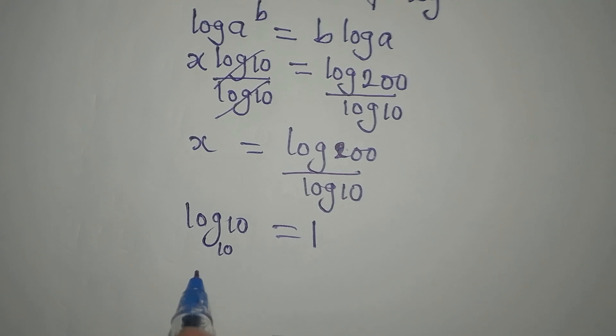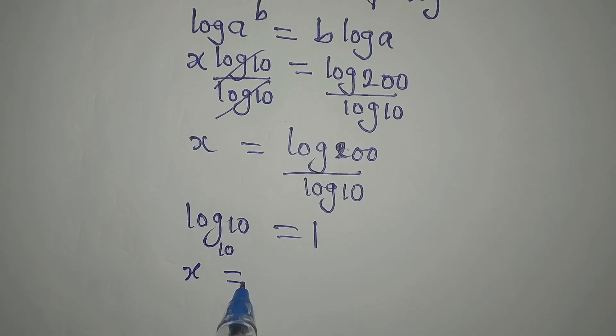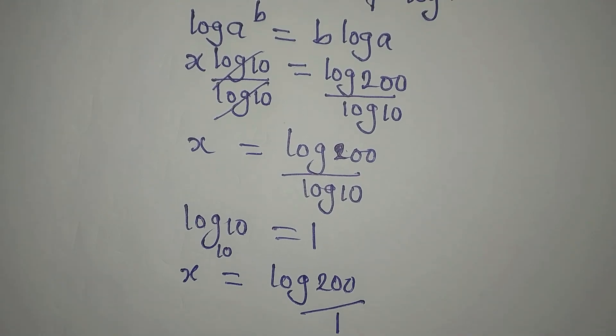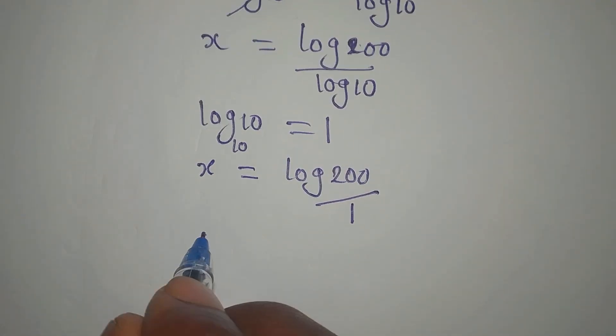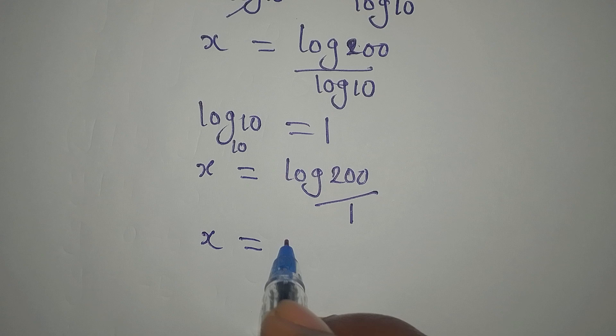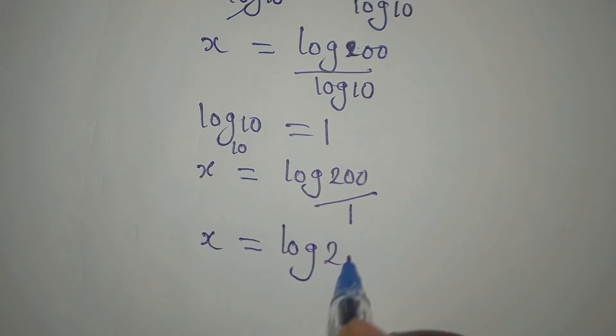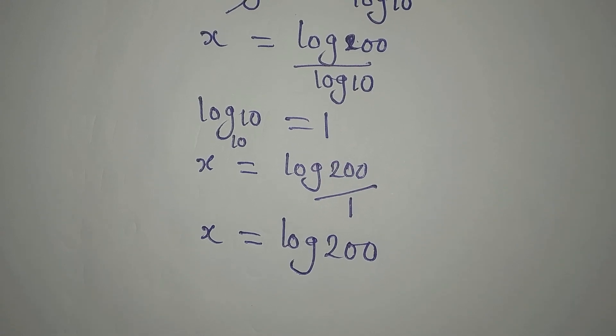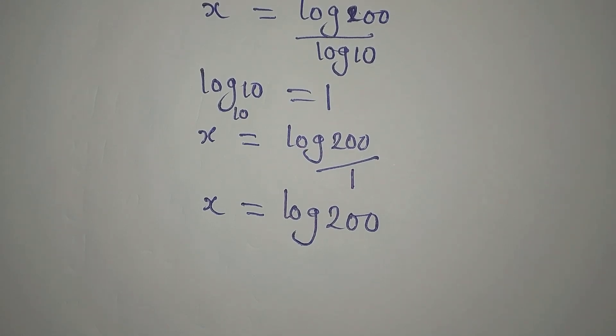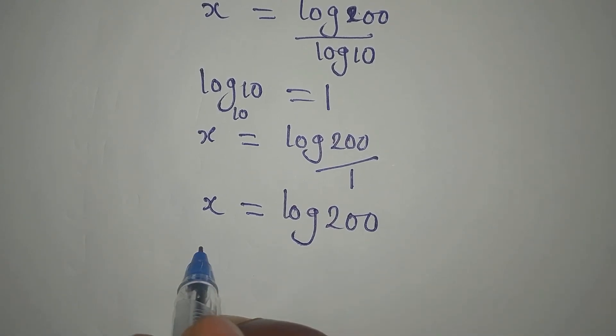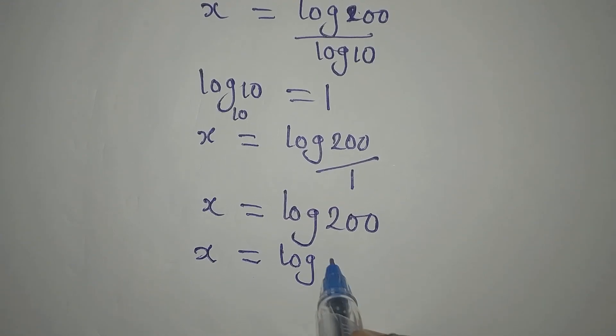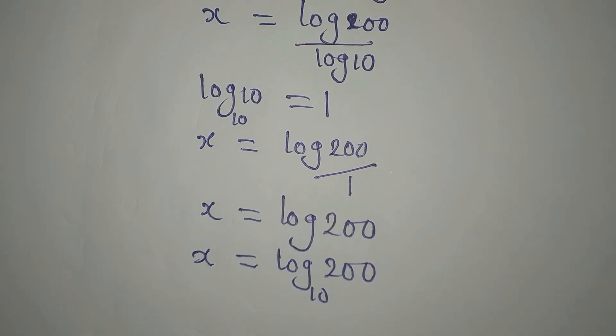Now we can simplify what we have here. But remember that log 10 is the same as 1, because this is log 10 to base 10. So if that is the case, then x will be equal to log 200. When you divide any number by 1, it gives you the same number, so we have log 200. This is the value of x.